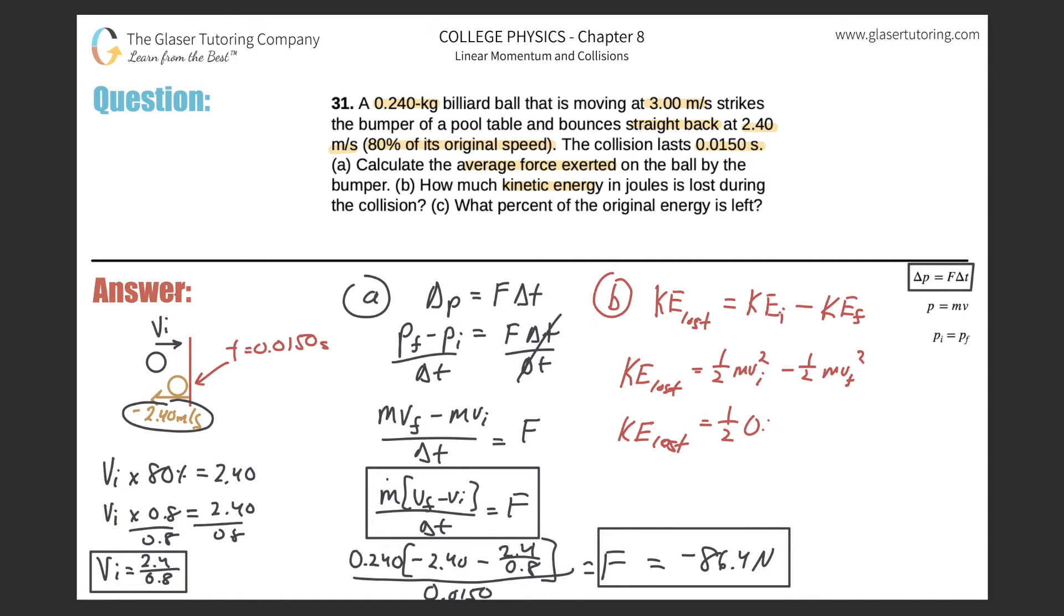So this is 0.24 multiplied by the initial velocity which we found to be 2.4 over 0.8, that's going to be squared, minus one-half times the mass again, 0.24, multiplied by the final velocity which was negative 2.4 squared. I'm running out of space. So simply plug that into the calculator.